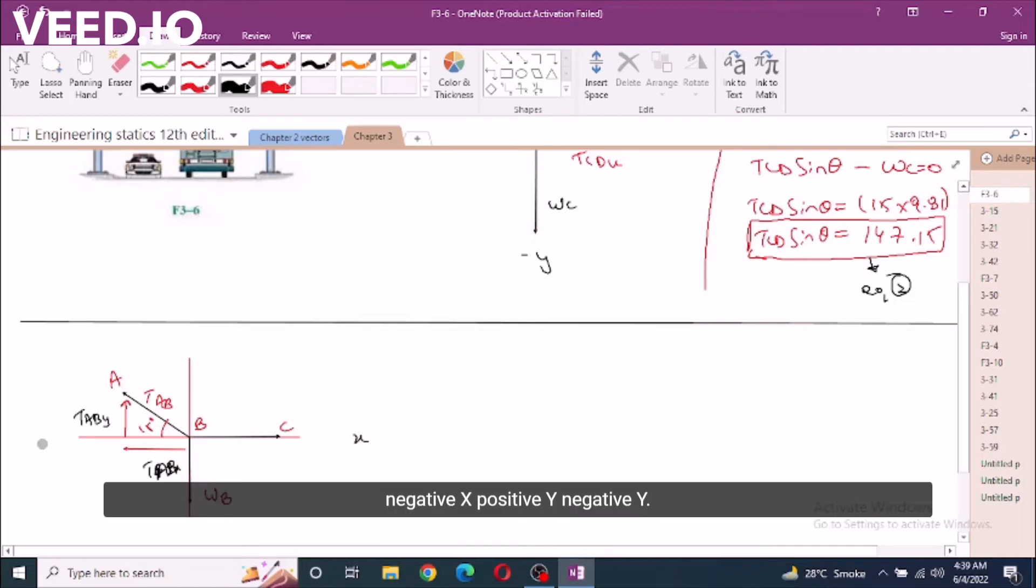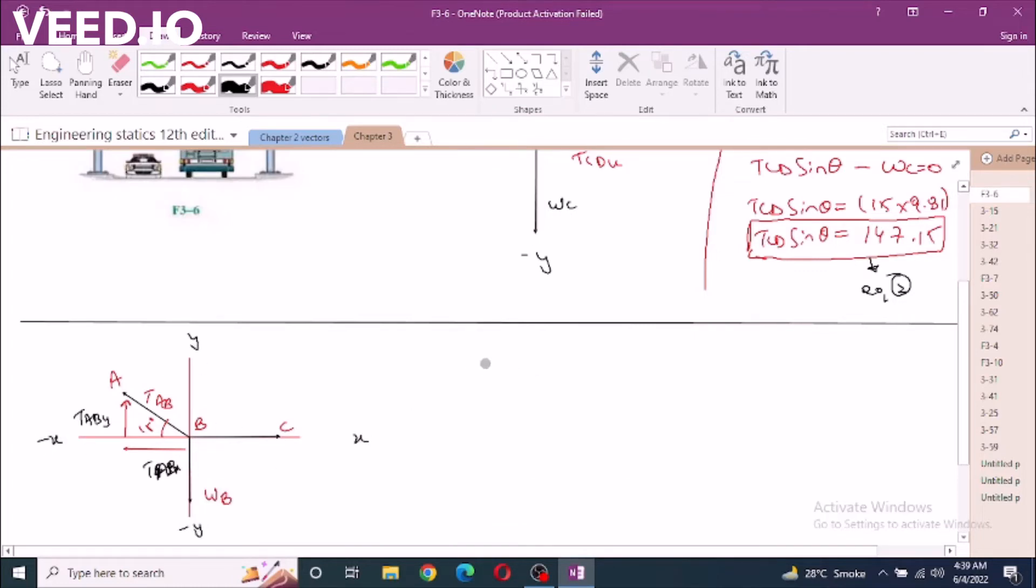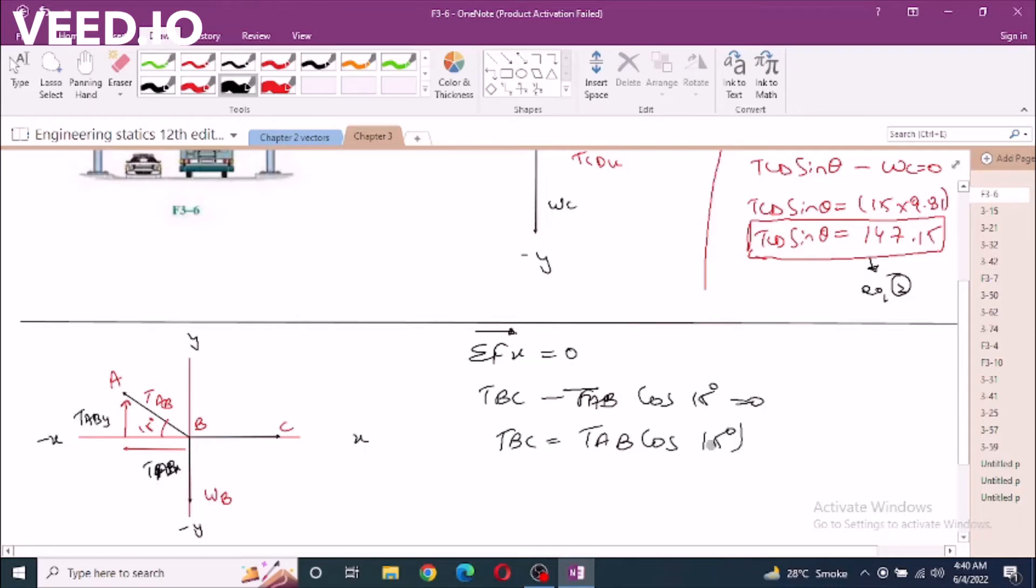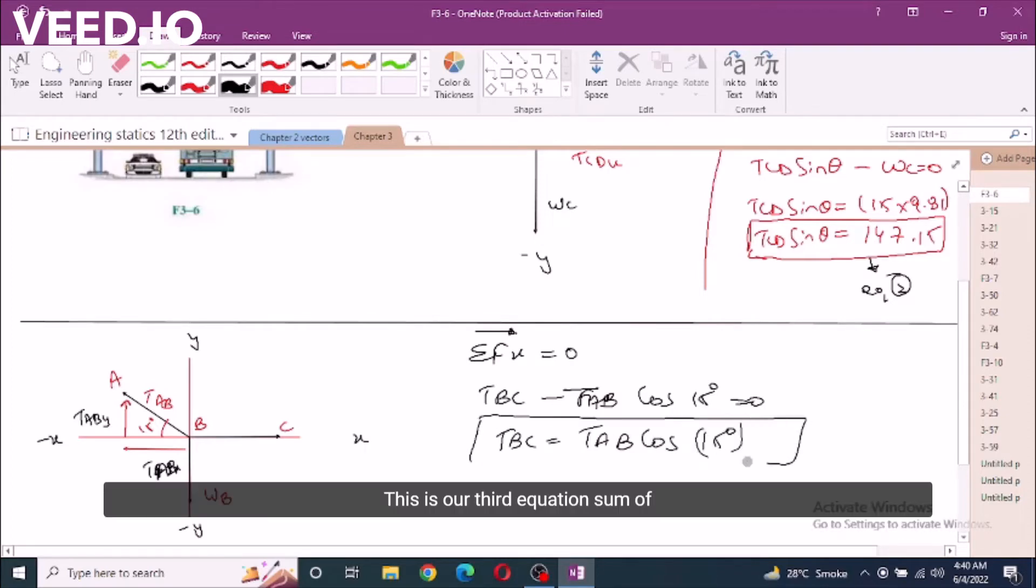Positive x, negative x, positive y, negative y. Now sum of forces in x direction equals zero. I have TBC minus TAB cos 15 degrees equals zero. TBC equals TAB cos 15 degrees. This is our third equation.